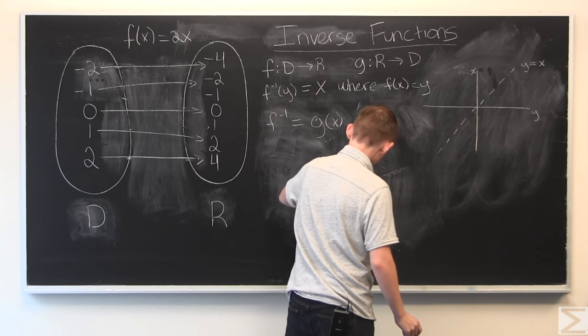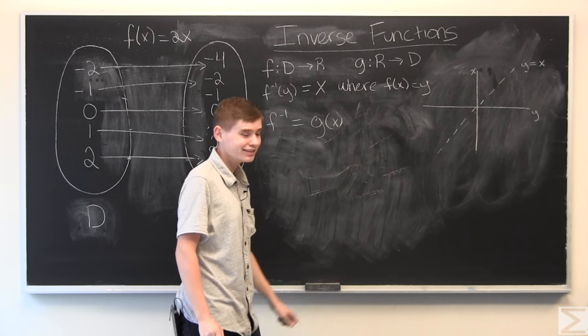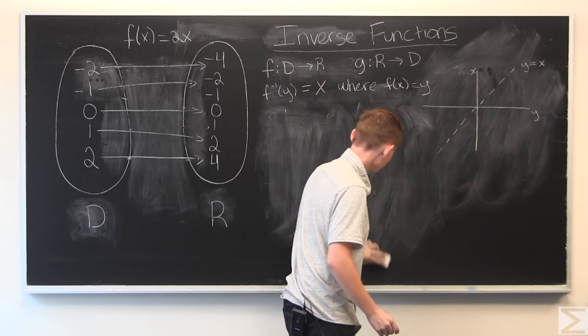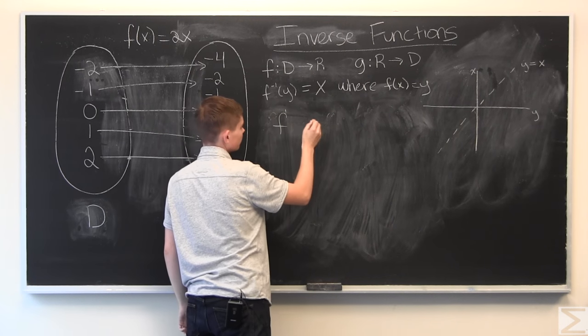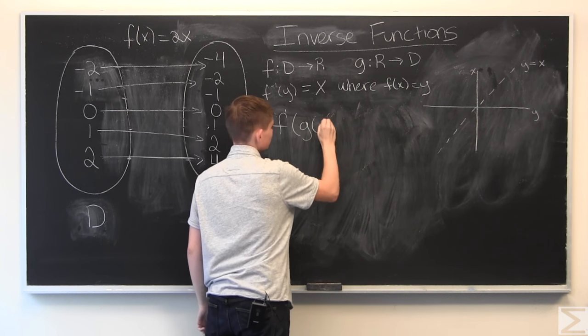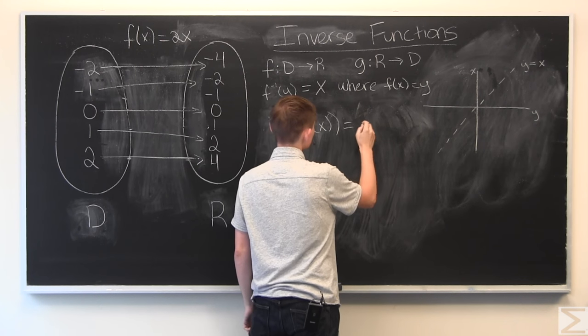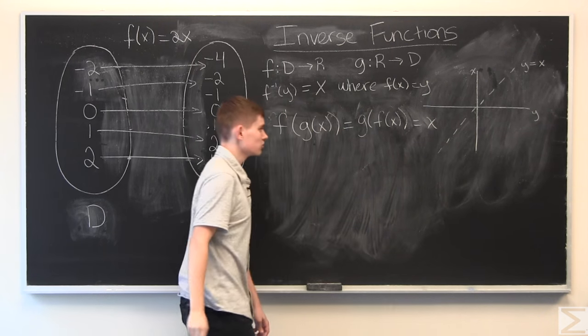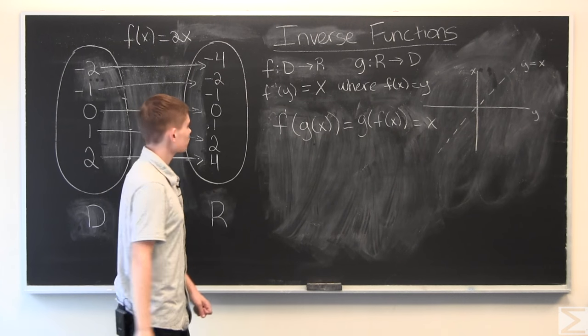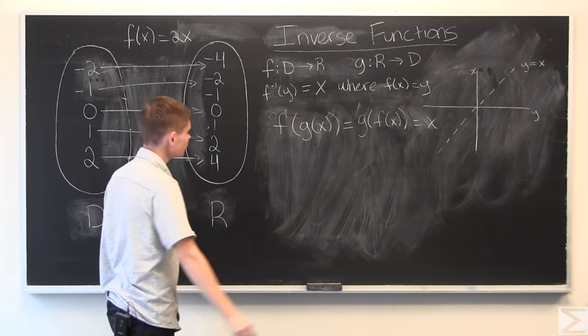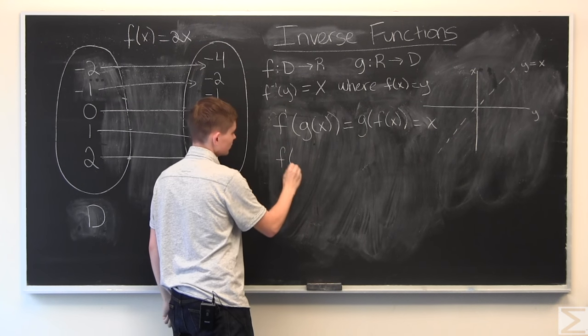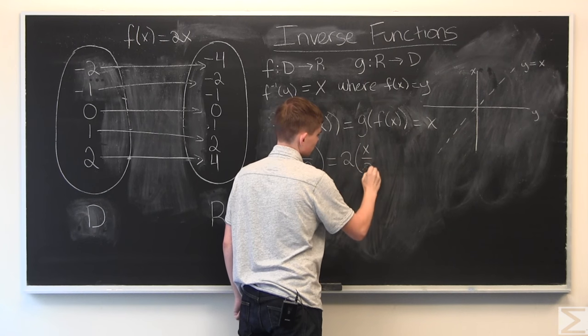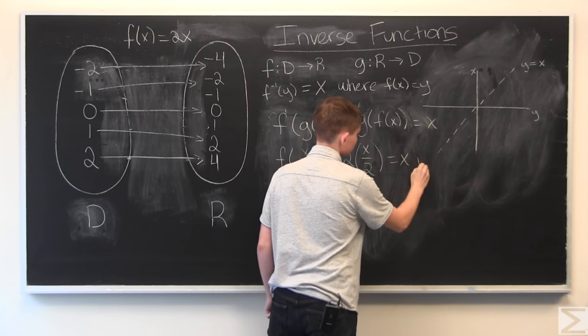So, now, in order to check your work and make sure you actually did find the inverse function, there is a simple relation between a function and its inverse. And it's if you take f of g of x, where g of x is the inverse of f, this is equal to g of f of x, which is equal to x. So, let's try it out. F of x is 2x. G of x is x over 2. So, f of g of x is f of x over 2, which is 2 times x over 2, which equals x. So, that checks out.